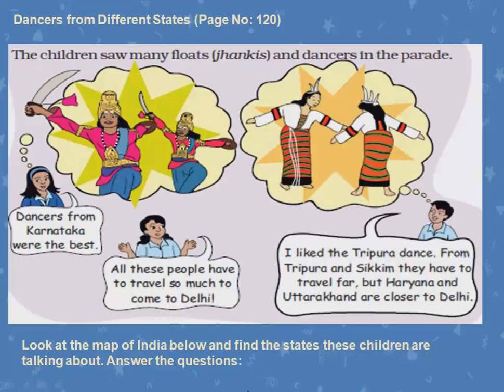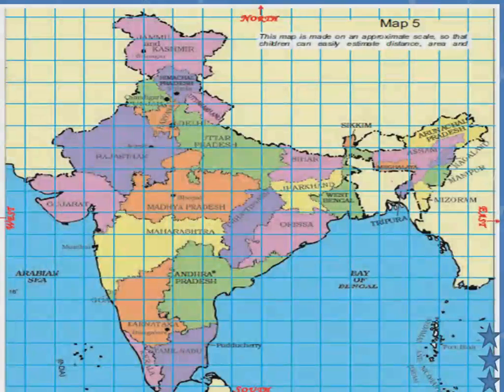The children are discussing the distances these dancers have travelled. Just like in our previous videos where we discussed the distance between Rajpur, Janpath Road and all — now we are discussing different states because these dancers are coming from different states. The children are thinking how much distance they have to travel. Look at the map of India given below and find the states these children are talking about, then answer the questions.